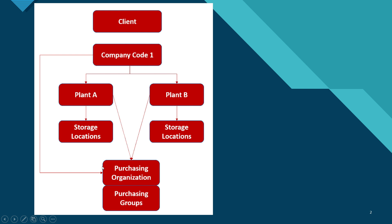Then we have the purchasing organization which is assigned to the plant. It can also be assigned to the company code, which is not mandatory. However, the assignment of plant and purchasing organization is absolutely mandatory. And then we have purchasing groups.